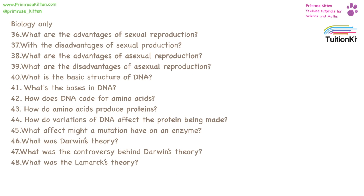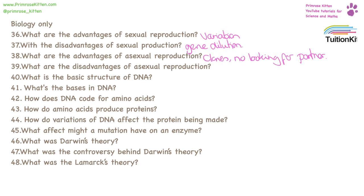Variation is the advantage to sexual reproduction. The disadvantage is that an organism is diluting its genes. The advantage of asexual reproduction is that you don't need to wait around to find a partner, and you're producing clones of yourself. The disadvantage of asexual reproduction is the lack of variation.